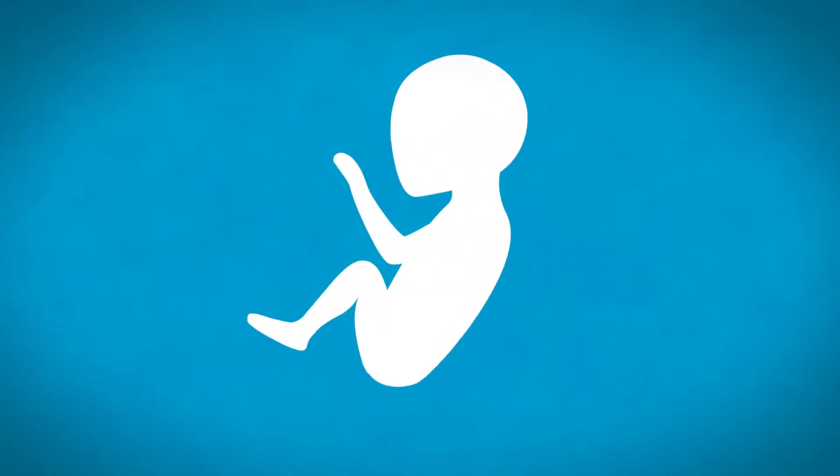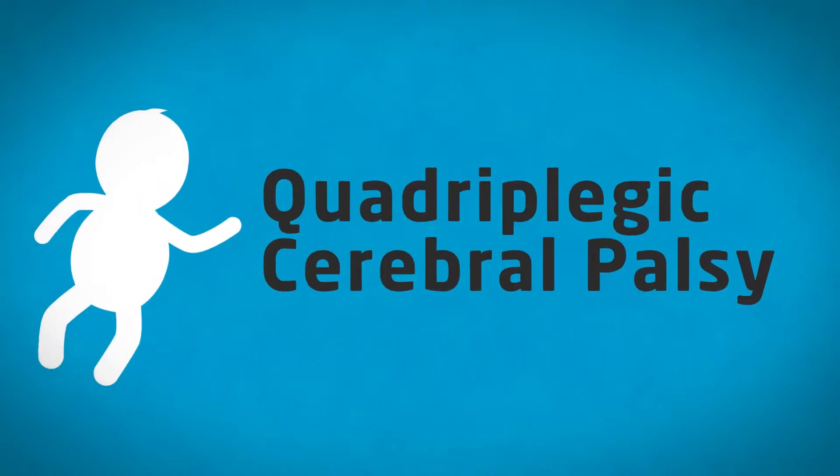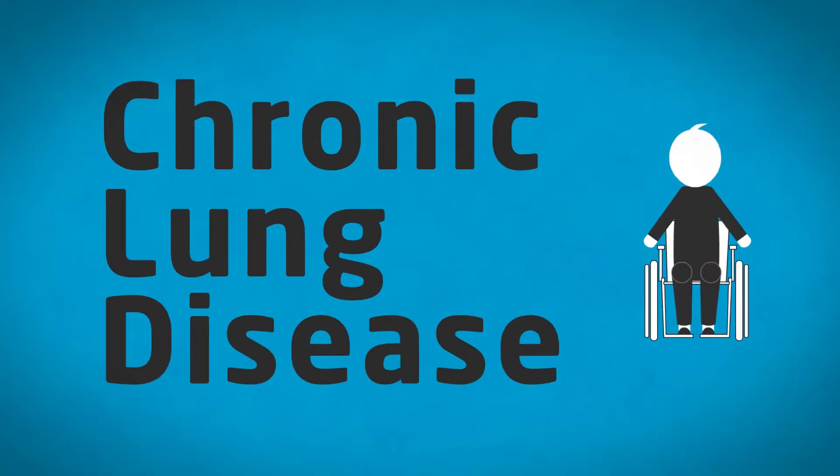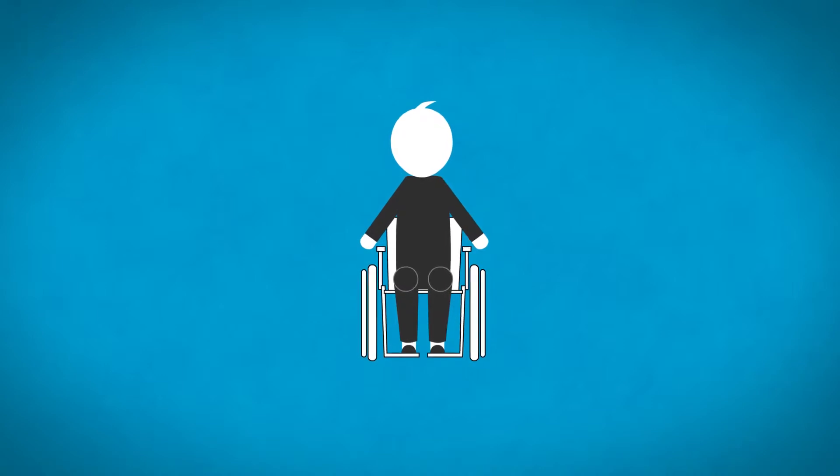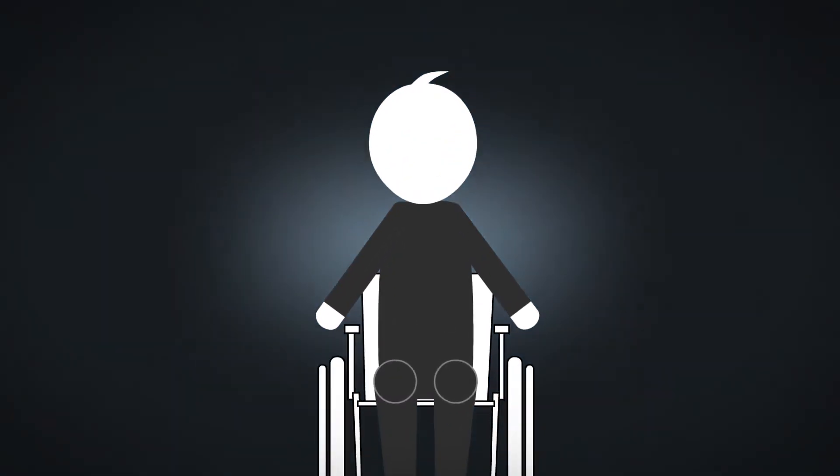Max was born very prematurely at 26 weeks gestation. At one year old he was diagnosed with quadriplegic cerebral palsy, dystonia, and chronic lung disease. Max is wheelchair-bound and unable to do anything for himself. He cannot see or communicate.